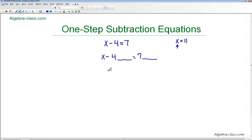And the reason that I'm leaving two blanks is because I know that I need to do something here to get rid of minus four. And whatever I do to one side of the equation, I must do to the other side in order to keep it balanced. So I'm going to draw two blanks to remind me that I need to do the same thing on both sides.